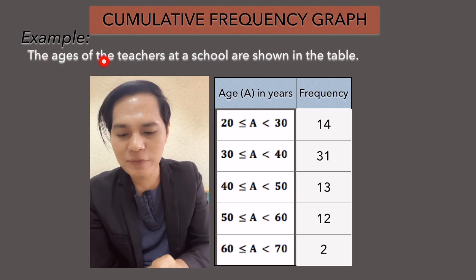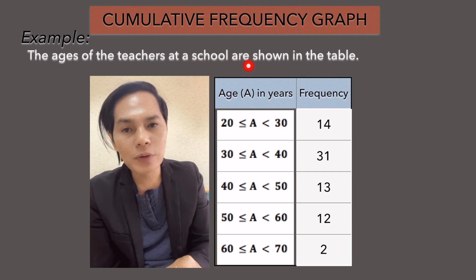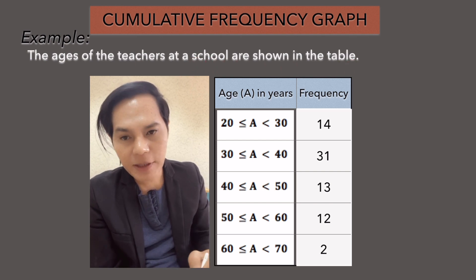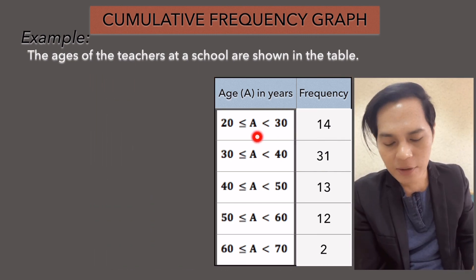I have here the ages of teachers at a school shown in the table. Look at this table here, age in years and the frequency. And this is a grouped continuous data.